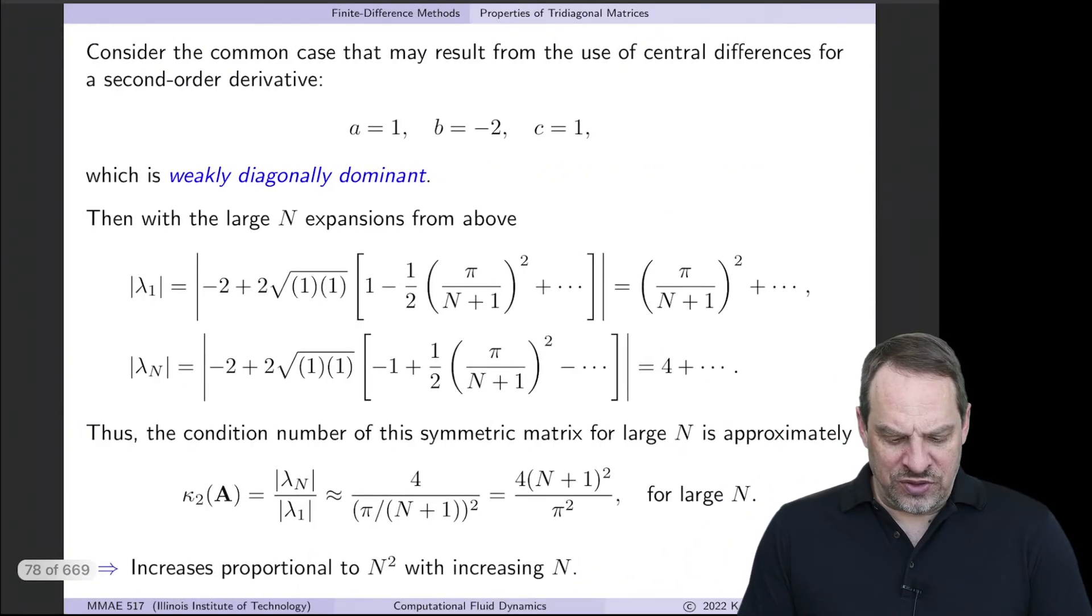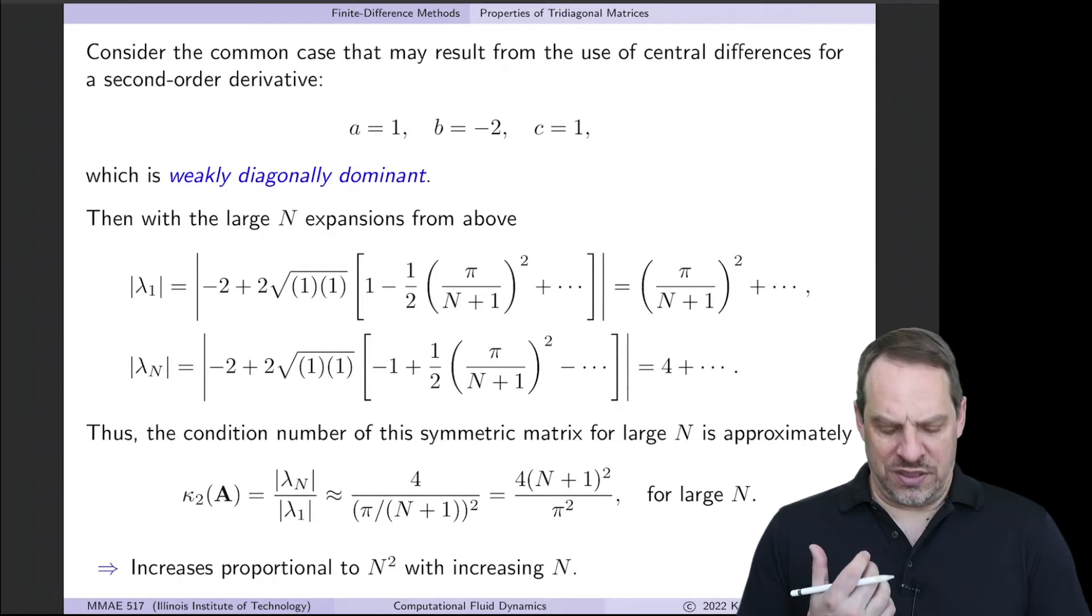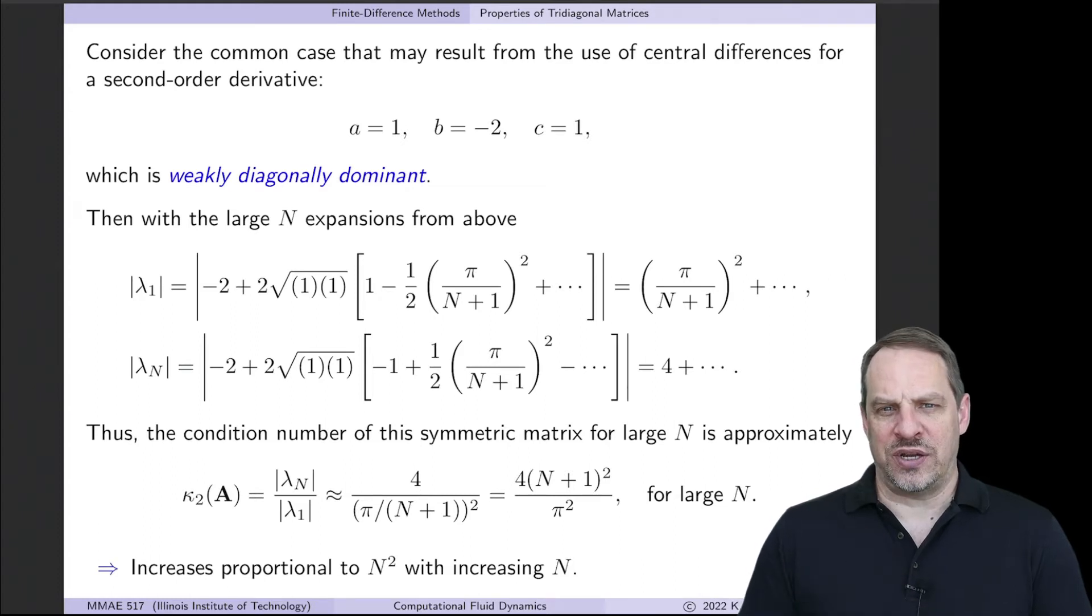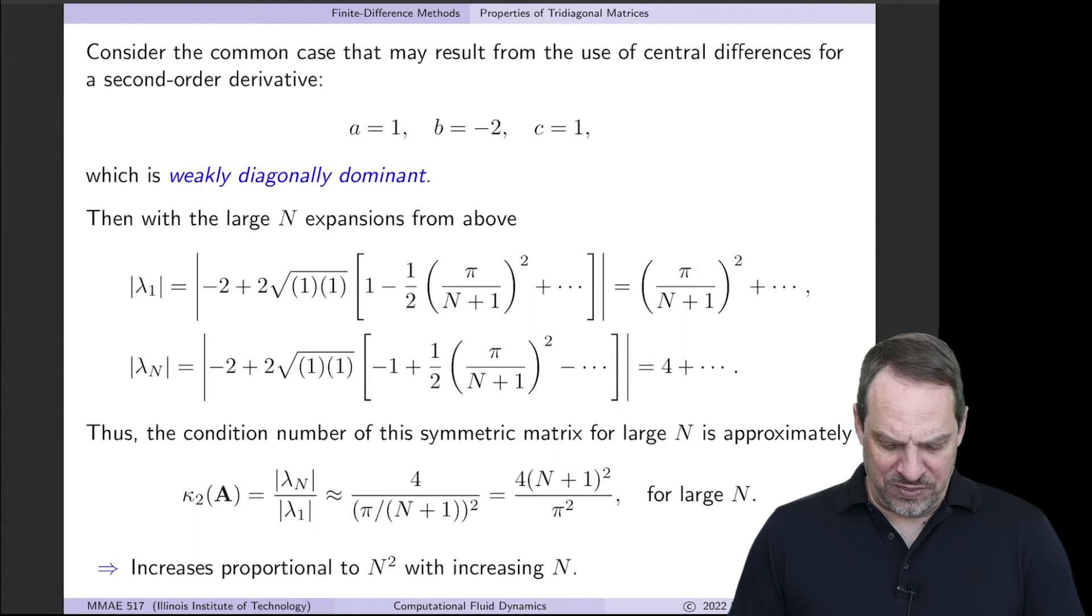So let's say first that a=1, b=-2, and c=1. So you'll notice here that this is only weakly diagonally dominant. The a+c is 2, and the magnitude of b is also 2. So it's weakly diagonally dominant. So we cannot prove that it's well conditioned, but we hope and expect that it's not going to be too bad. And we'll see how that works out.